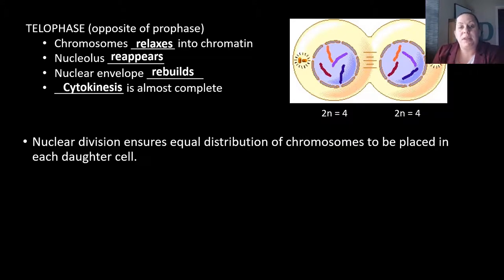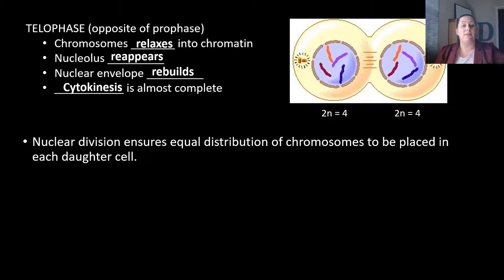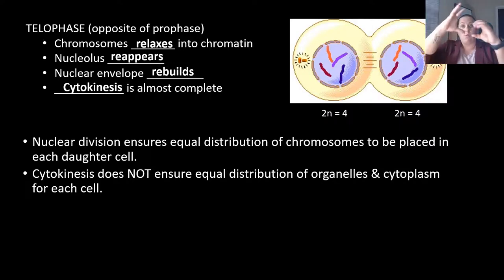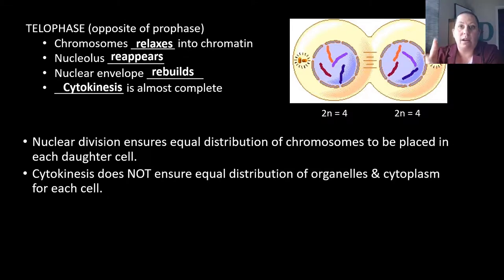Nuclear division ensures equal distribution of chromosomes in each of the new daughter cells. We lined up the four in the middle and pulled them apart, allowing each to get the right amount of chromosomes — they all ended with four, like the first cell began with. Cytokinesis, however, does not ensure equal distribution of organelles or cytoplasm. It's typically in the middle but could be uneven where one cell is bigger than the other — cytokinesis does not guarantee exactly equal division of organelles and cytoplasm.